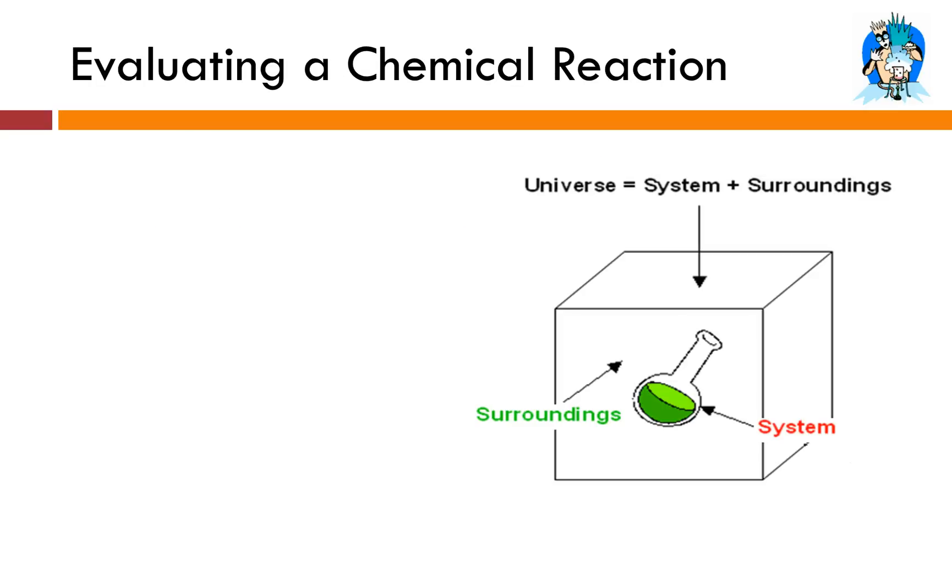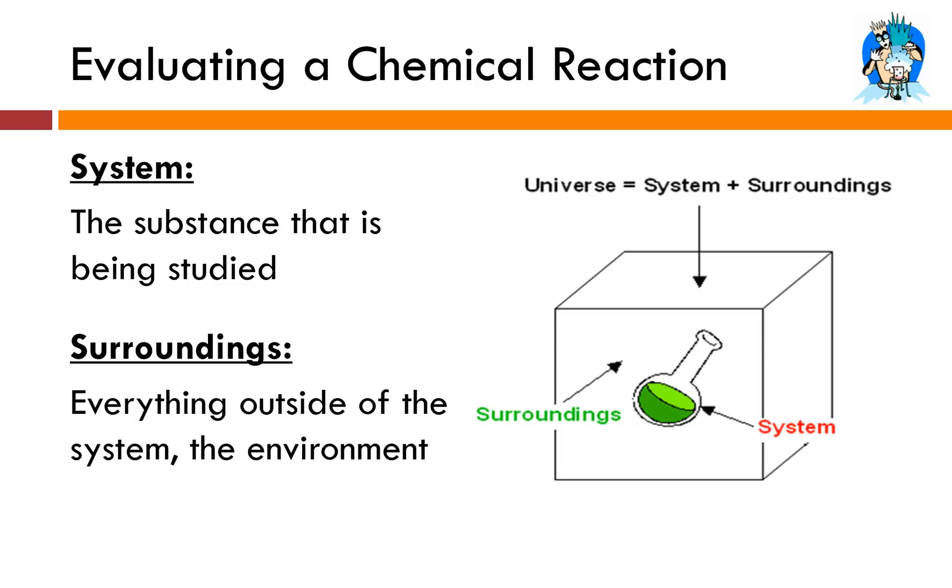So just quick review: system and surroundings are two terms that you were introduced to in the last lesson. The system is the actual reaction or change that's being studied. The surroundings are everything else and that includes the reaction vessel.